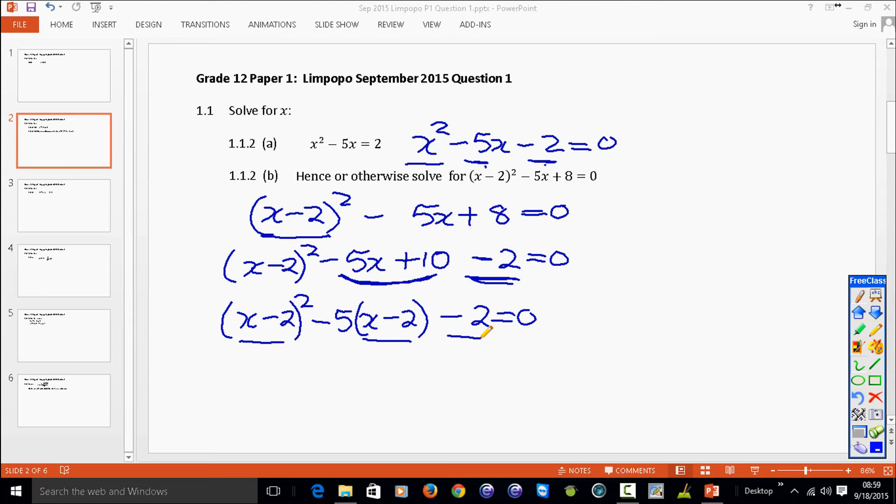So if the solution of the previous one was x is equal to 5.37 or x is equal to negative 0.37, we can now say x minus 2 is equal to 5.37, which gives us x is equal to 7.37, or x minus 2 is equal to negative 0.37, which gives us x is equal to 1.63.